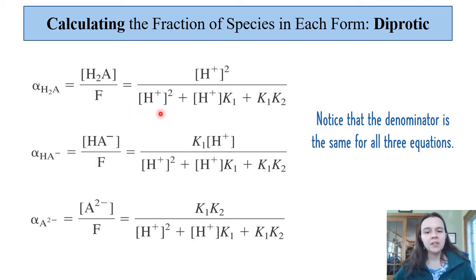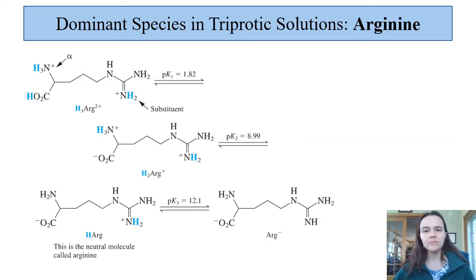The denominator on this is going to be [H+]^2 + [H+]K1 + K1K2. On top we have some changes in what the equilibrium constants and H+ concentrations end up being. You can refer back to a slide like this if you ever come into a question where you have to calculate the actual percentage.